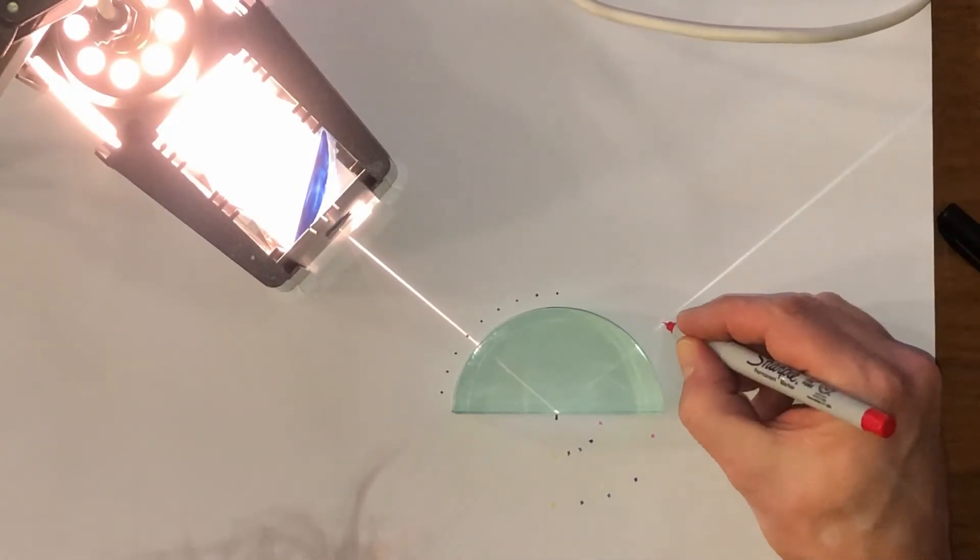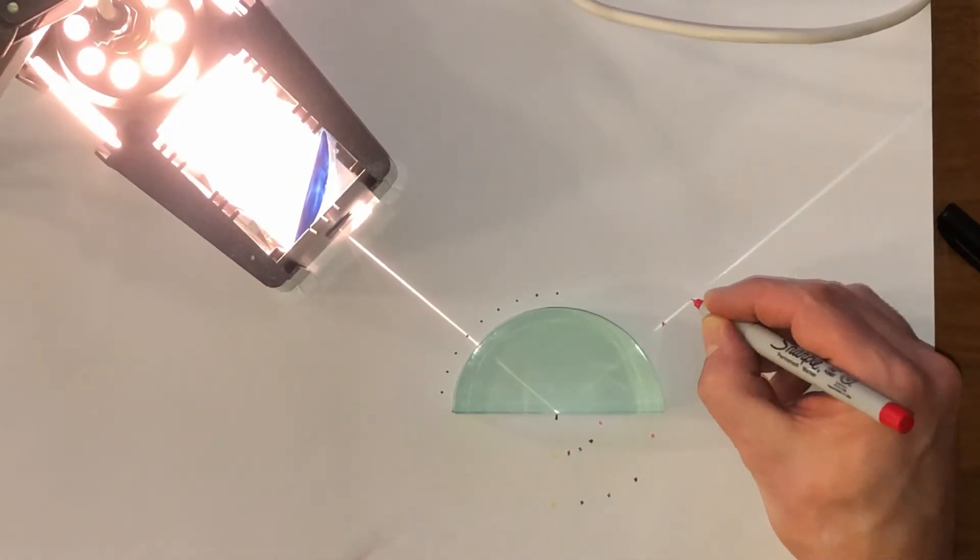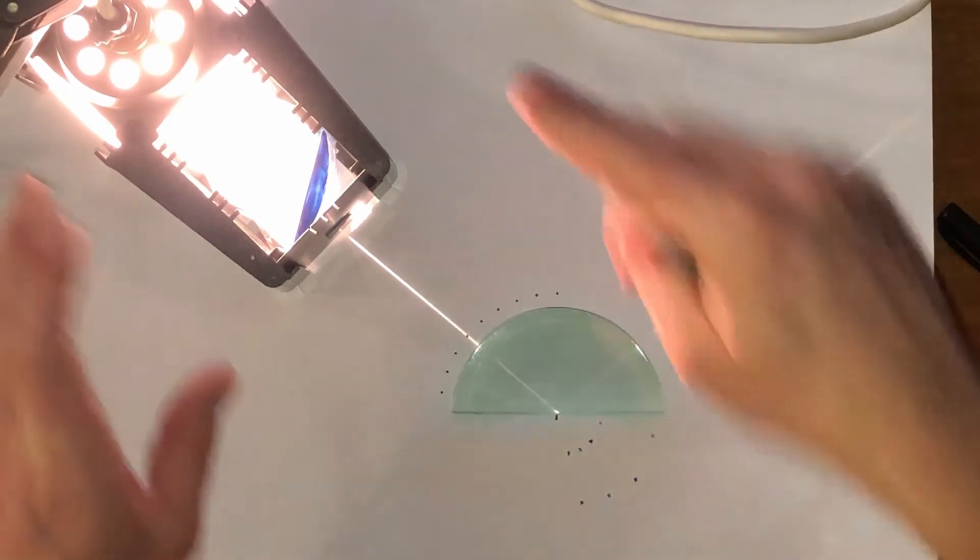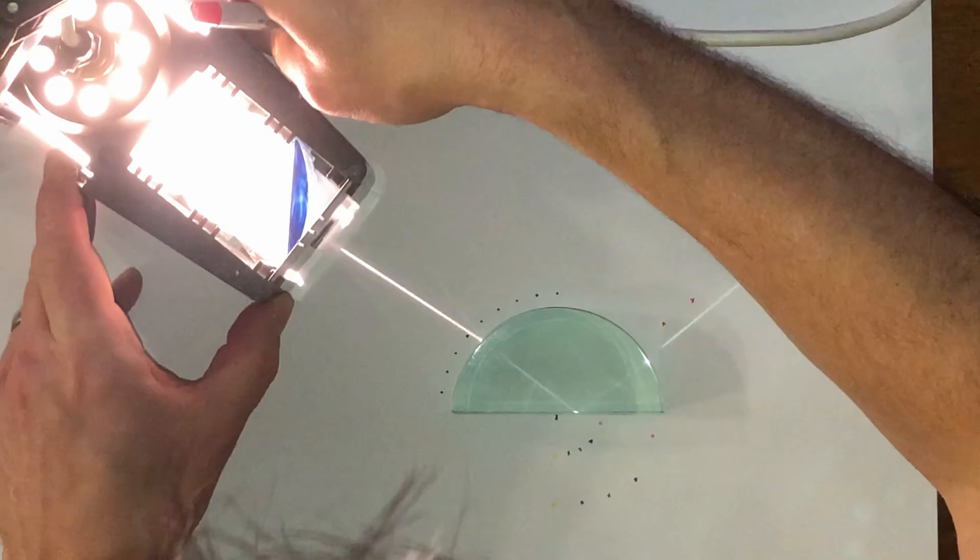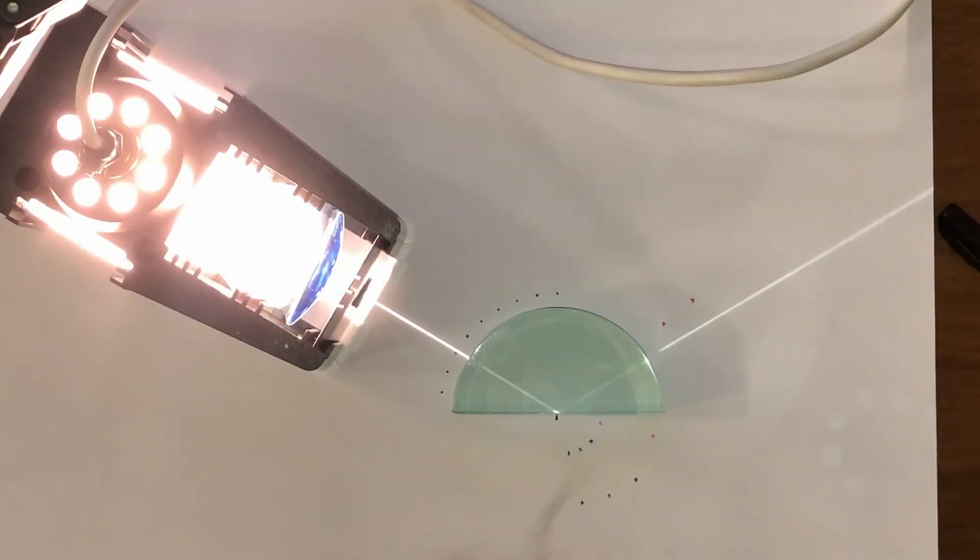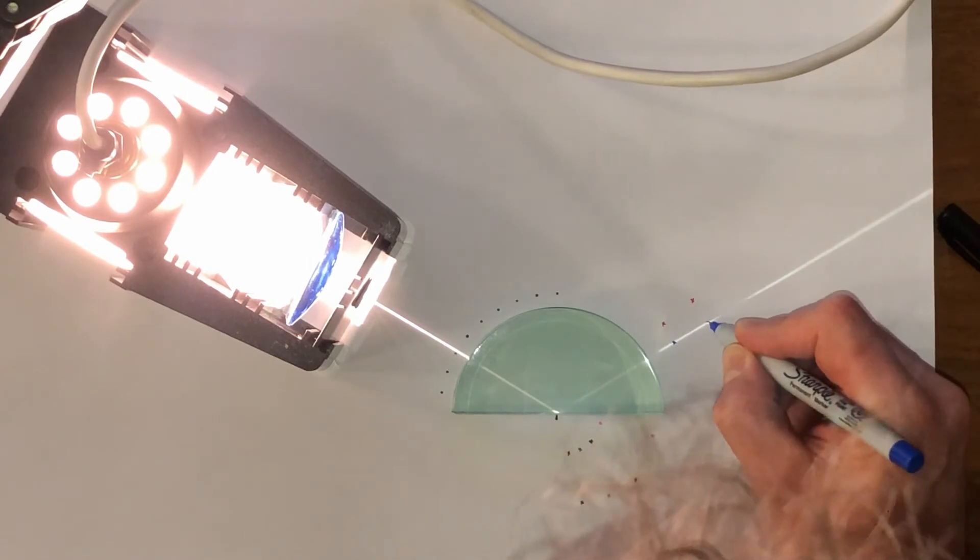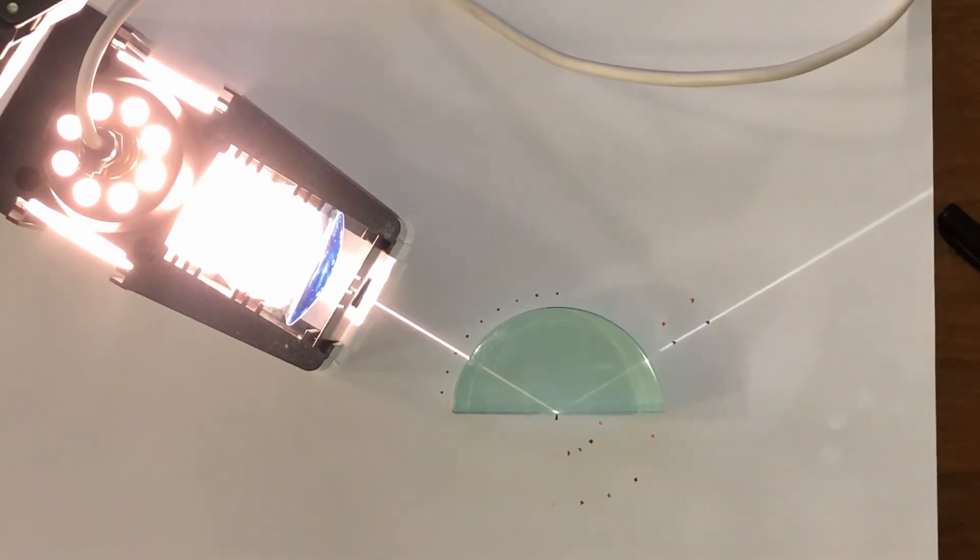Now I see that the ray has reflected—it's done total internal reflection within the block. I continue with the rays all the way through to 60 and 70 degrees. I've missed out 80 and 90 so my diagram doesn't become too cluttered.